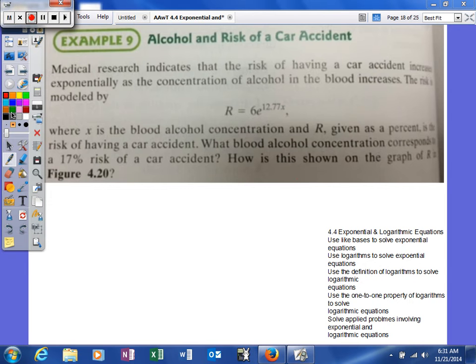This is actually taken from your textbook, as you can see, and what we're going to try to do is figure out our formula. One thing when you're doing an applied problem like this is to make sure your units are correct. So, x is the blood alcohol concentration—that's what we're trying to find—and R is going to be our percent risk of having a car accident.